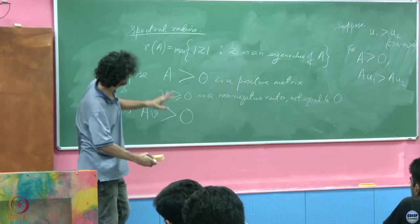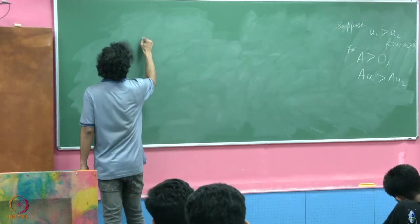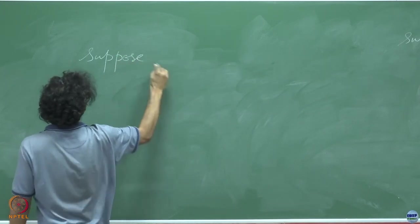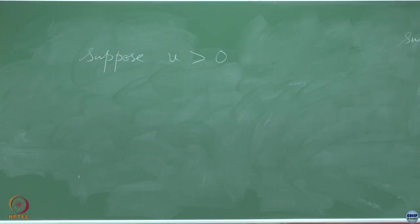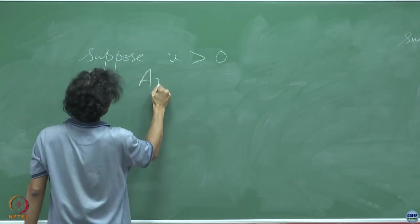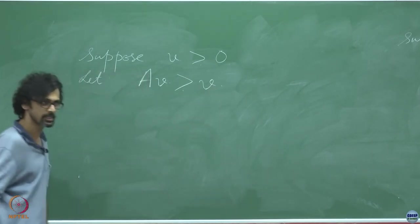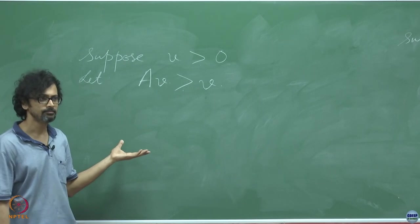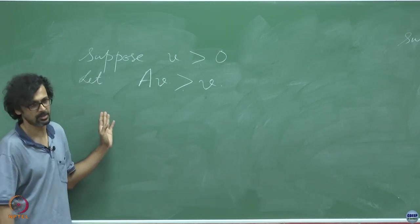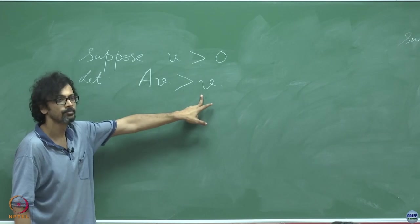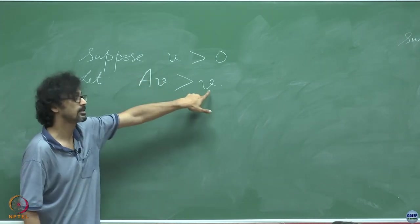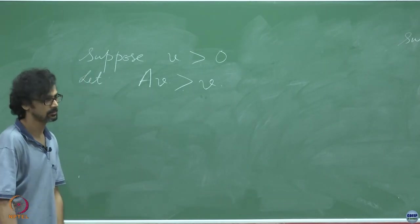Now, suppose V is a positive vector and AV > V, meaning whenever A acts on V it generates a new vector each of whose entries is greater than the corresponding entry of V. Then A^k V > V for all k. A is a square positive matrix, as in the Leontief model.